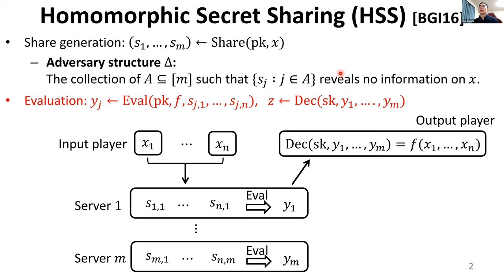Homomorphic secret sharing is an important building block for multi-party computation. As in standard secret sharing, it has a sharing algorithm which takes a secret X as input and outputs M shares. The privacy requirement is specified by the adversary structure delta, which is the collection of subsets A such that the shares in A reveal no information on the secret X. Homomorphic secret sharing has additional algorithms called evaluation and decryption algorithms. N input players generate M shares from their private inputs and send them to M servers. Each server locally runs the evaluation algorithm on function F and the N shares it receives. Finally, an output player collects all the outputs of the evaluation algorithms from servers and runs the decryption algorithm, whose output is supposed to be a value of the function F.